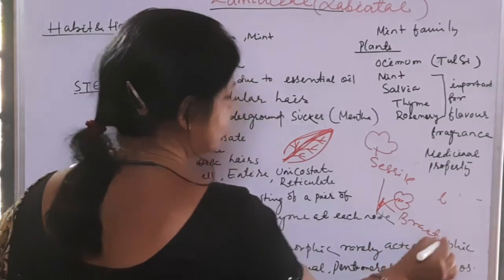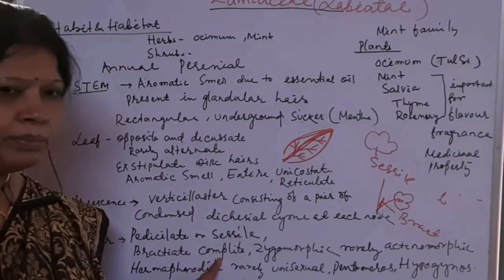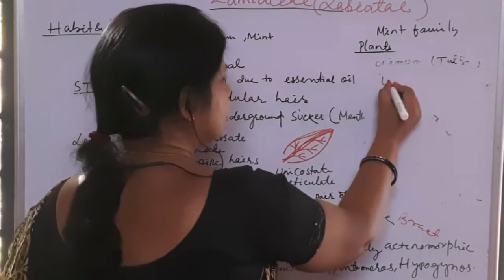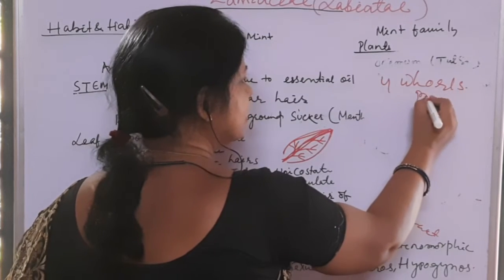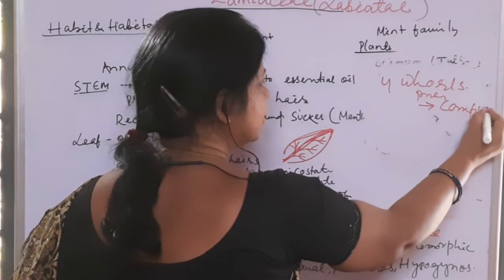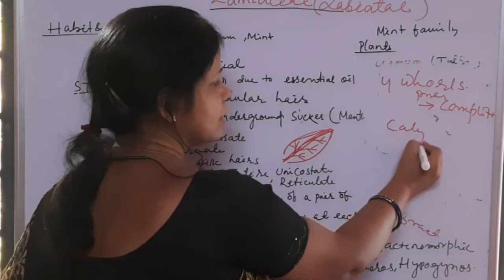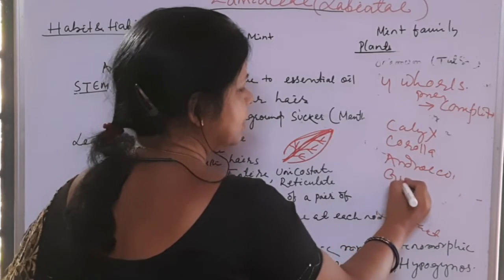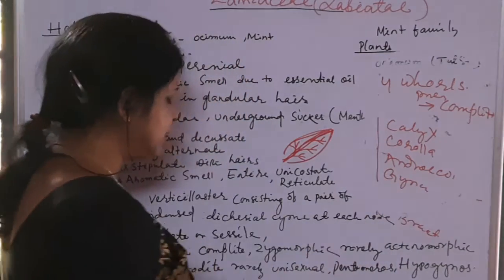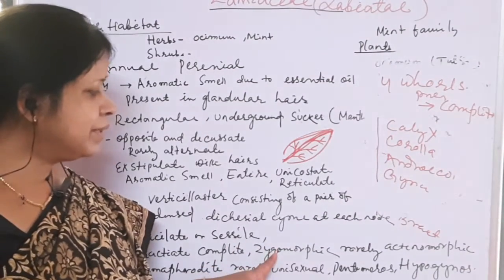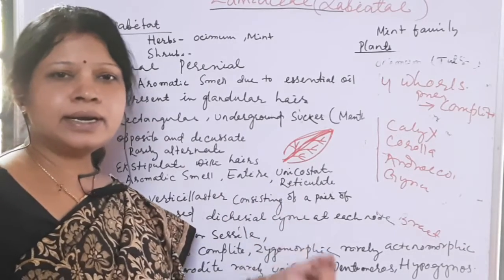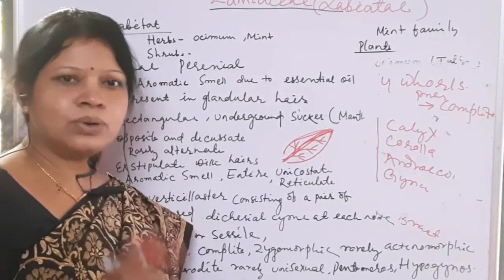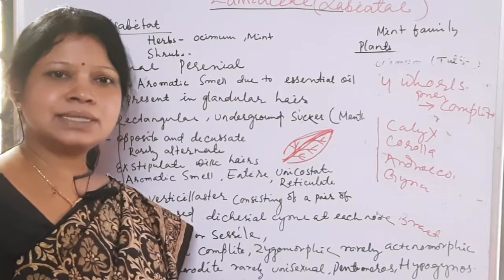The flower has four whorls: calyx, corolla, androecium, and gynoecium. If all four whorls are present, it is a complete flower. Zygomorphic flowers are mainly present in this family — zygomorphic means the flower can be divided into two equal halves in only one vertical plane. Rarely, actinomorphic flowers are present. Zygomorphic flowers have unequal petals.